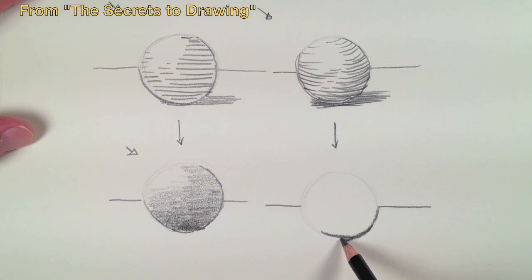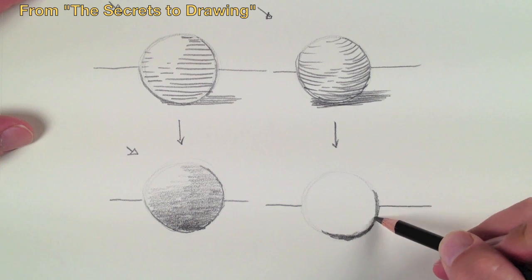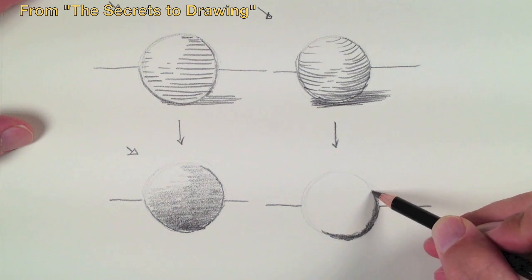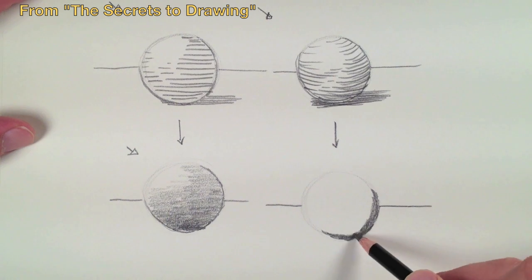If, however, we follow the cross contours of the object when we add our value in shadowing, we can go further in creating the illusion of form.